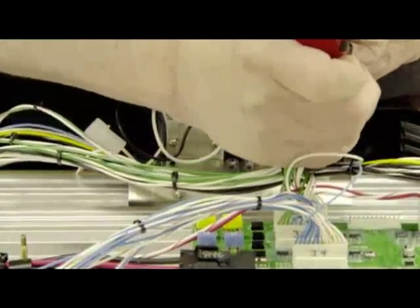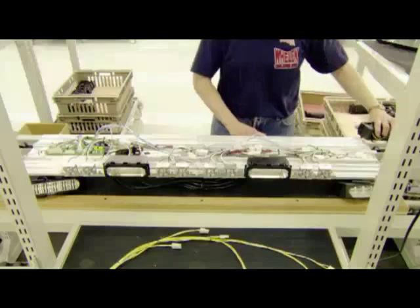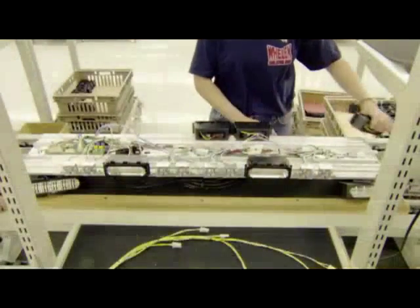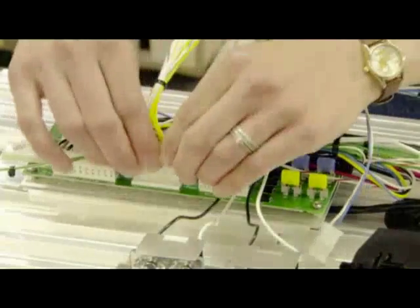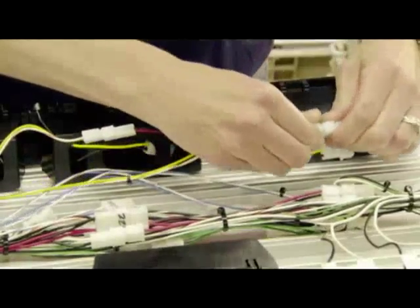After mounting the white light modules on the brackets and securing them to the base, workers take the colored LED modules and slide them onto the tracks on the base. They make the internal connections to the control board, then plug each module into the control board harnesses.